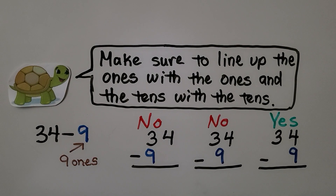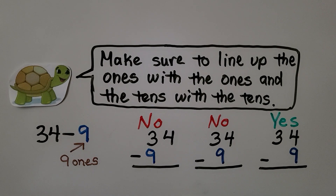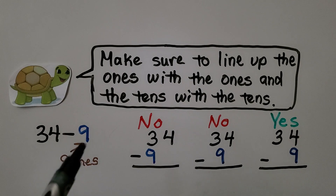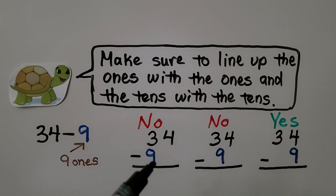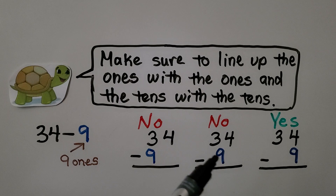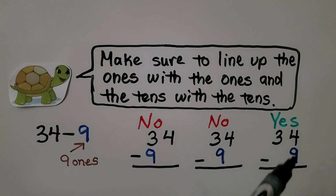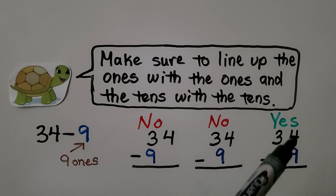Make sure to line up the ones with the ones and the tens with the tens. For example, with 34 minus 9 — that's only nine ones — we would not write the nine in the tens place or in the middle. We make sure the nine is underneath the four in the ones column.